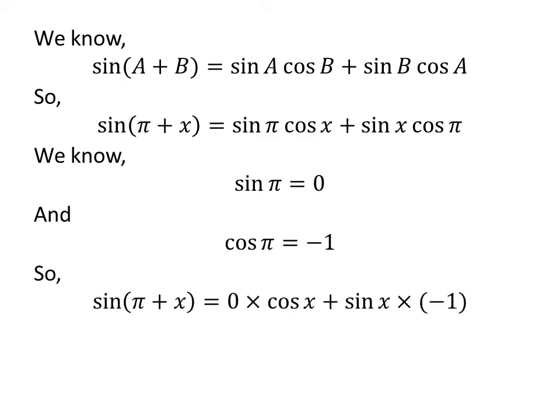Let us replace the value of sine of pi and cosine of pi in the above expression of sine of pi plus x. So, we got sine of pi plus x is equal to 0 times cosine of x plus sine of x times minus 1.